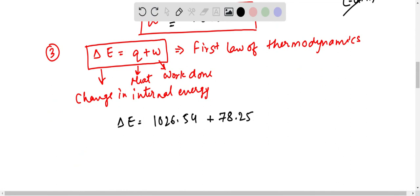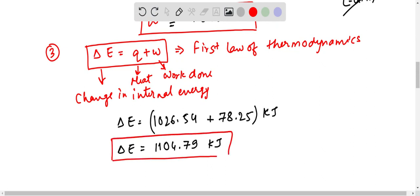This completely makes as KJ. Delta E becomes now, we will just simply add. This will be 1104.79 KJ. So this is our answer to this problem. I hope you understood the concept. Thanks for watching.